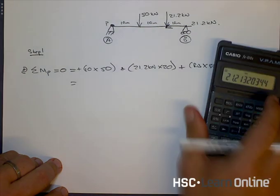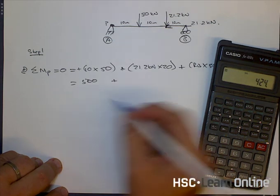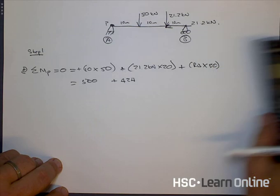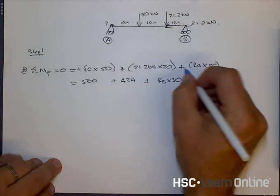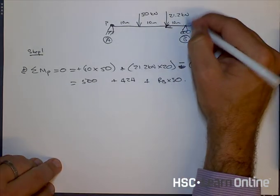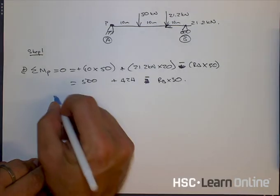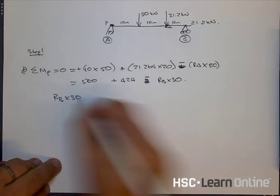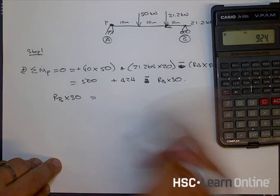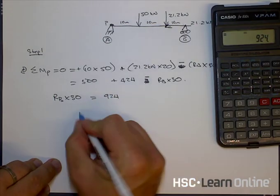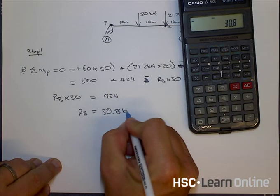So if we go through and do that quickly on our calculator, that's going to be 500 plus 21.2 times 20 is going to be 424 plus RB times 30. We don't know what that is. Sorry, not plus. This should be a minus, because RB is going to be acting in an anti-clockwise direction. So when we do this, RB times by 30, bringing this over the equal sign, is equal to 500 plus 424 is 924 kilonewtons. So RB is equal to that divided by 30, which is 30.8 kilonewtons.